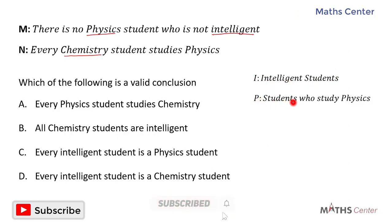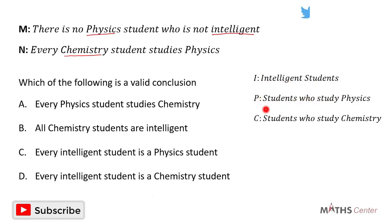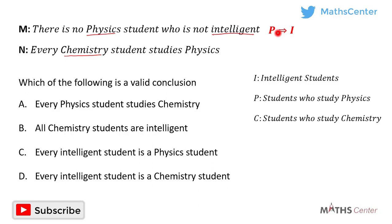The letter P represents physics students. The first statement is: there is no physics student who is not intelligent. What it means is that if someone is a physics student, it means that the person is intelligent. So if someone belongs to P, it implies that the person also belongs to I. If someone studies physics, it implies that the person is intelligent. That is the first statement.